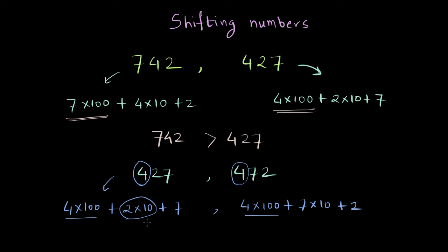We obviously have to look at tens. Because 427 has 2 tens but 472 has 7 tens, it's quite clear that 427 is less than 472. And this is how we can compare numbers when the digits are being shifted.